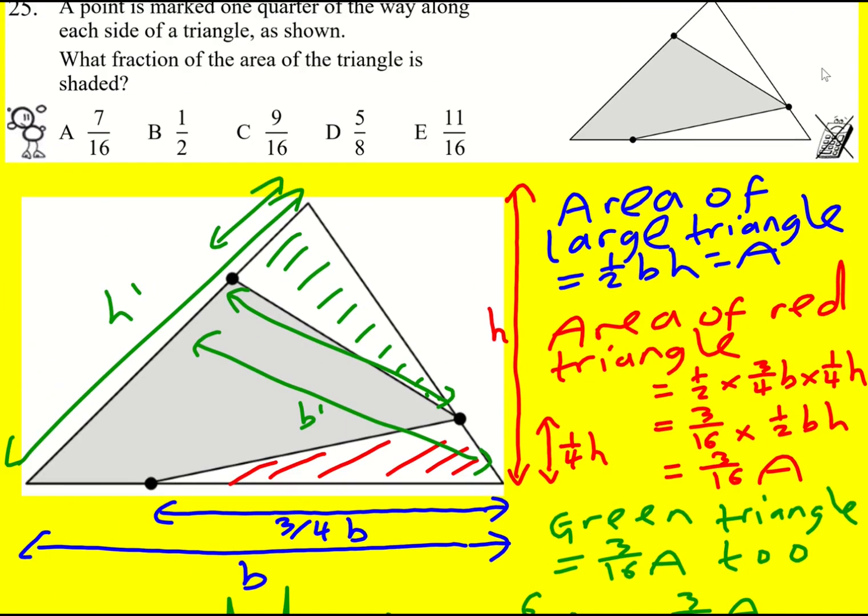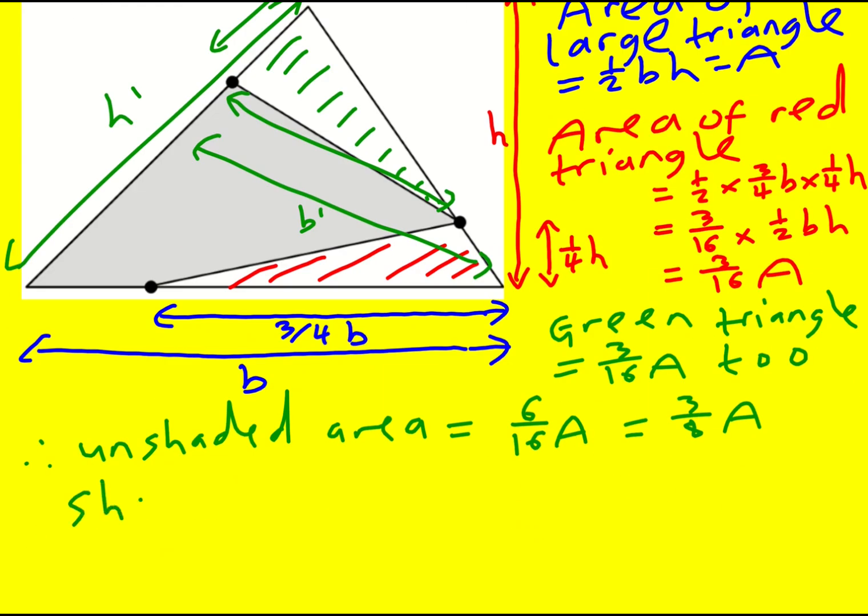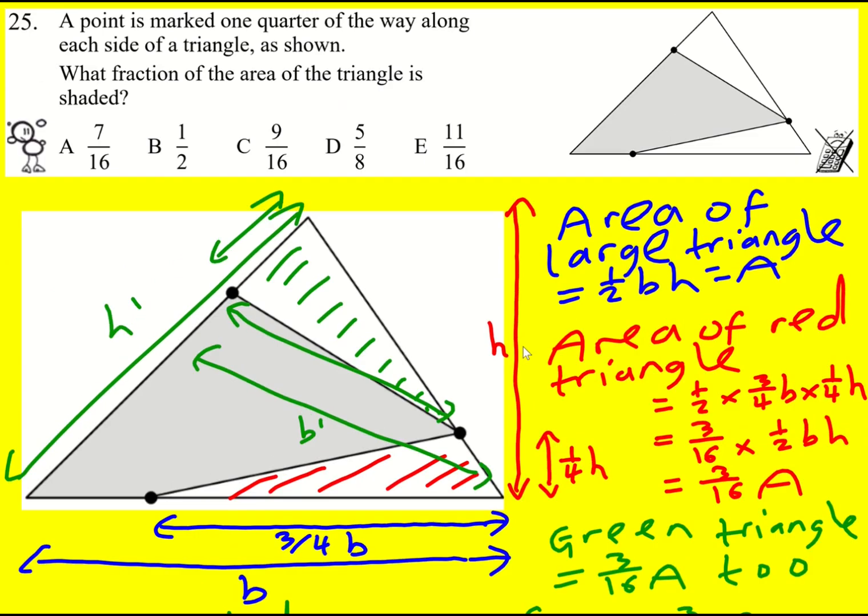I've actually forgotten what we've been asked. What fraction of the area of the triangle is actually shaded? So the shaded area is going to be the whole area of the triangle minus three eighths A, which is five eighths A. What fraction is shaded? It's five eighths. Nice.